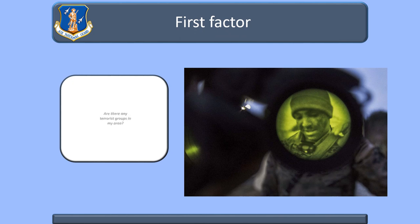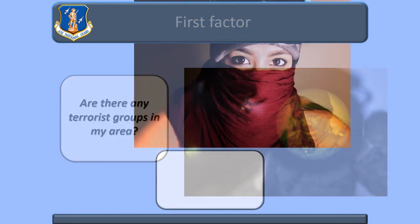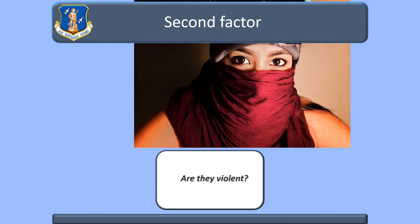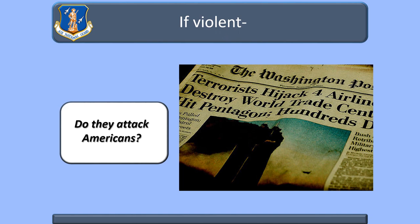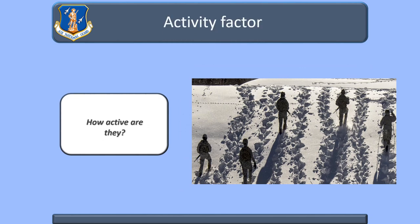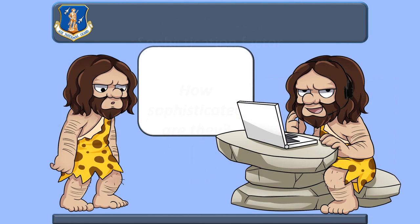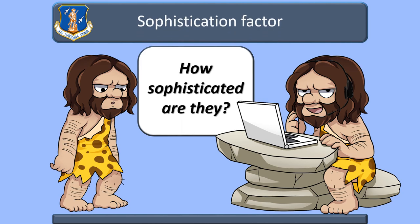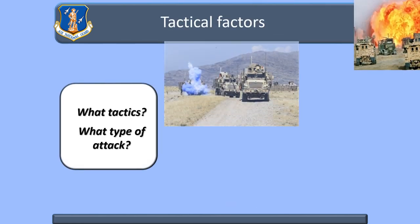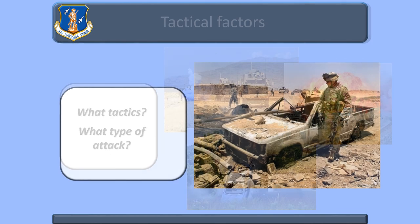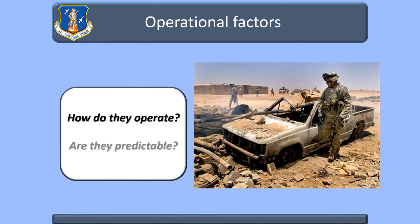The first factor is to determine if there are terrorist groups in your area. Second, determine if the terrorist group has a history of violence. If the group is violent, do they specifically target Americans or American interests? Another factor is how active the organizations are in your area. The level of sophistication must be determined for any terrorist group. The amount of local support an organization has can determine if you will receive warning from the local population. An important factor involves determining their tactics and how they plan attacks, and finally, how do they conduct operations and are they predictable?